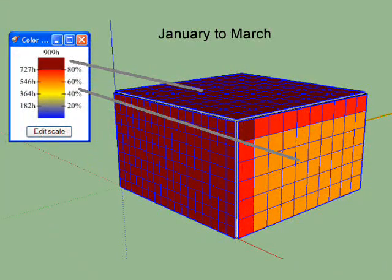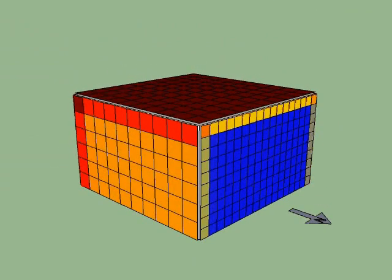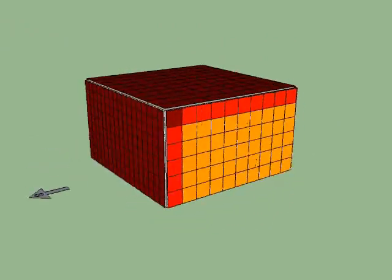What can be interesting is to compare summer results from winter results. We will here focus on January to March with an accumulated number of hours of 909 on these three months. We easily see that in this period it's mainly the south face that is receiving the solar exposure.